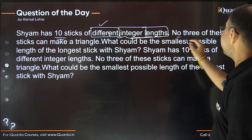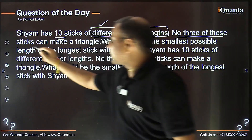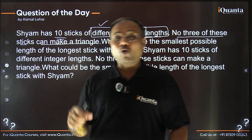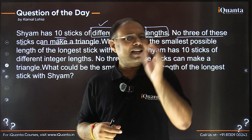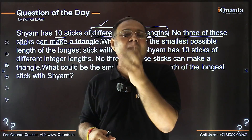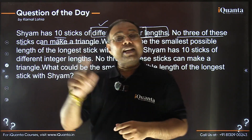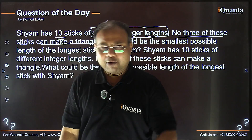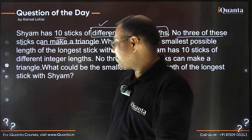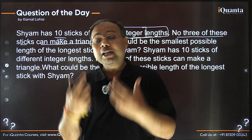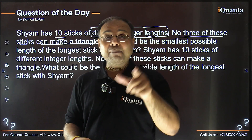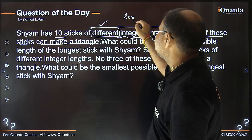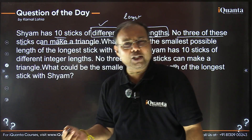Now the condition: no three of these sticks can make a triangle. That means if I pick any 3 sticks from the 10, I cannot form a triangle. For example, if I take 1, 2, 3 — can a triangle be formed? Let me remind you of the triangle inequality we discussed in previous questions.